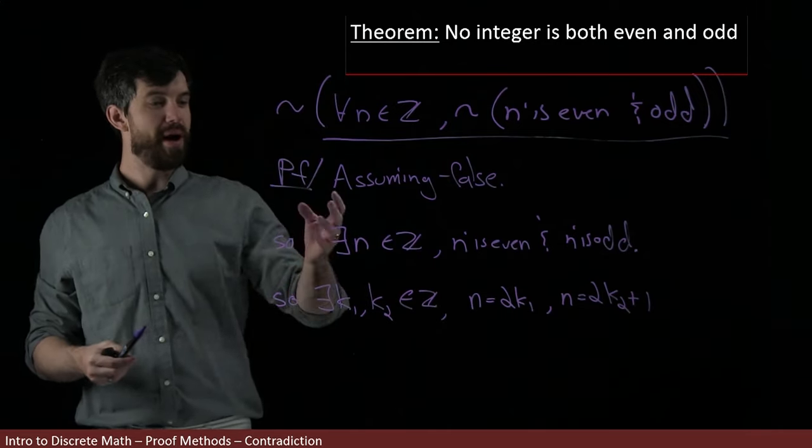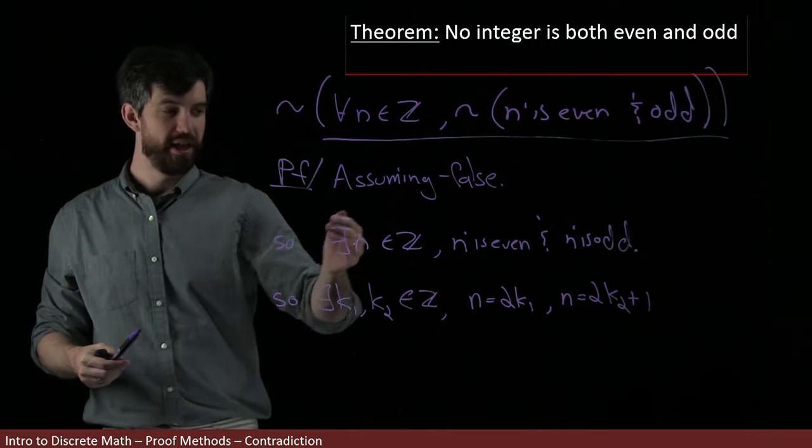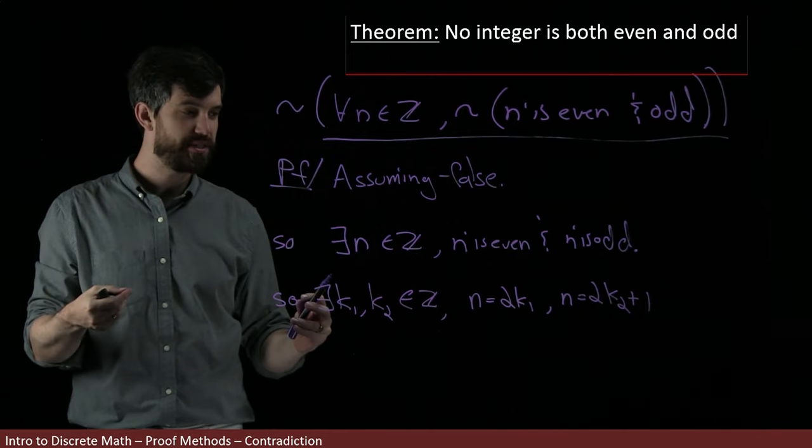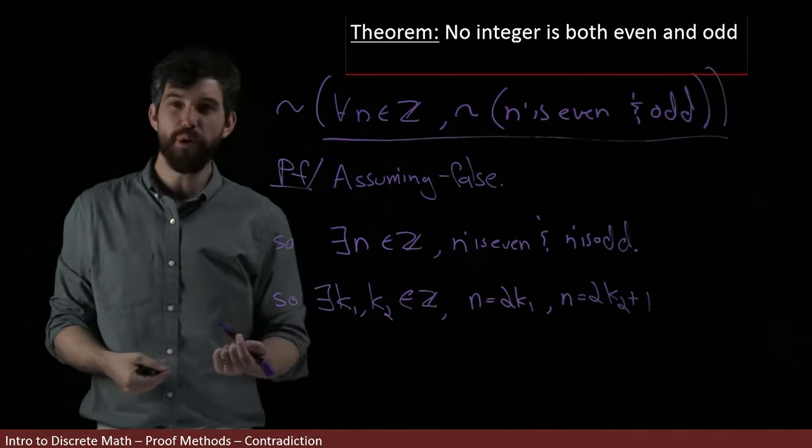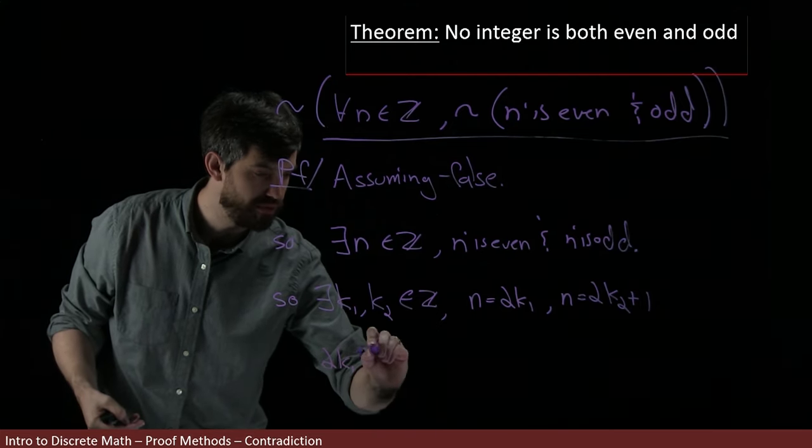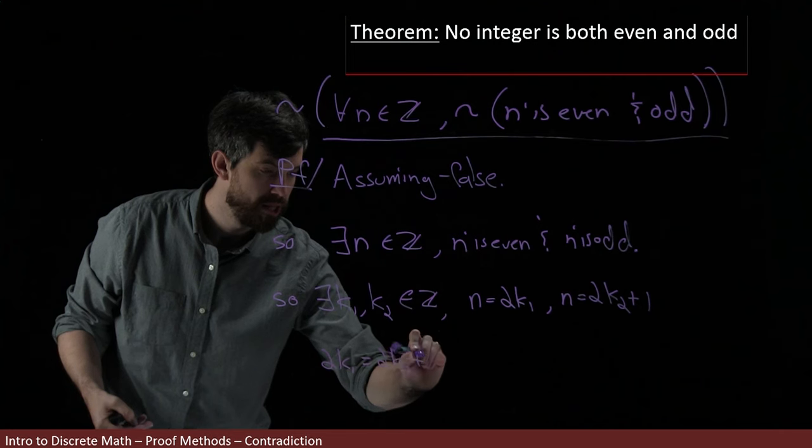All right. So there was my assumption was the first two lines. Now I've applied my definitions. Now I'm going to do some manipulations. And what do I get here? These are both n, so I'll set them equal to each other. So 2k1 is equal to 2k2 plus 1.